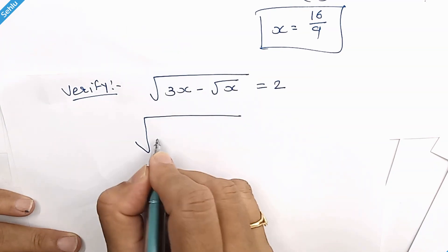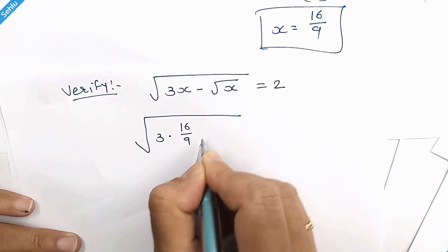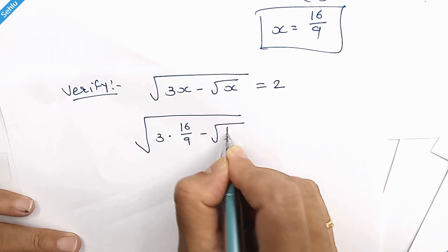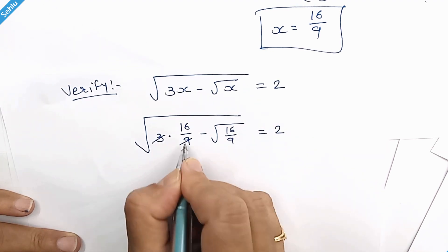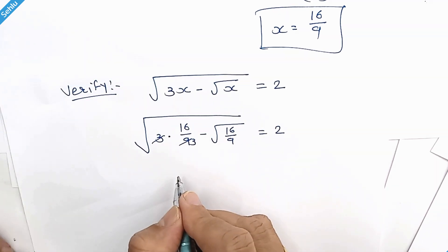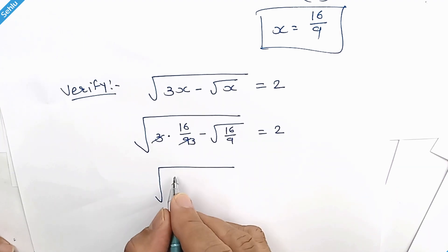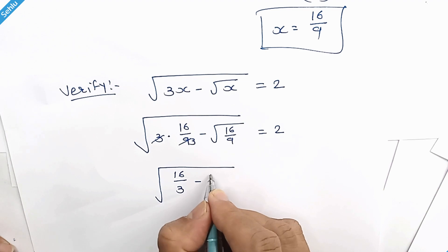Square root of 3 times 16 over 9 minus square root of 16 over 9. 3 times 3 is 9, so it will be square root of 16 over 3 minus, square root of 16 is 4 and square root of 9 is 3.